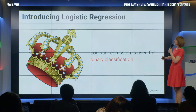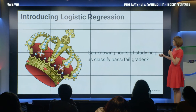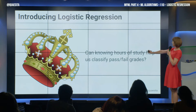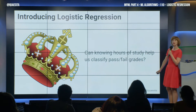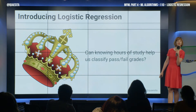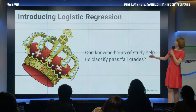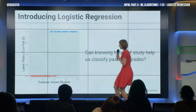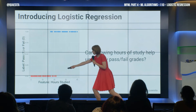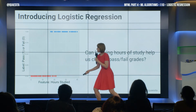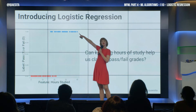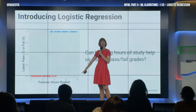We're going to apply this to a made-up example: can knowing the hours that a student has studied help us guess whether they are going to pass or fail an exam? On the x-axis we have the number of hours studied from 0 to 40. In blue, the ones are passes; the reds are fails.